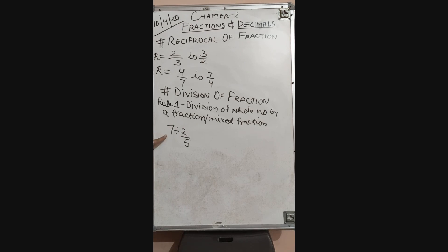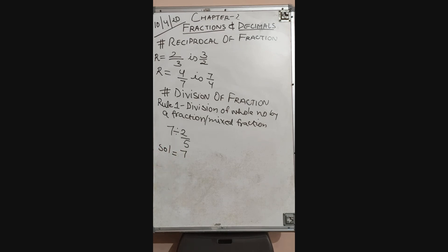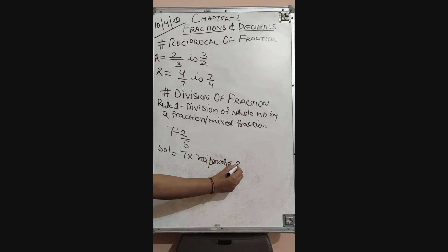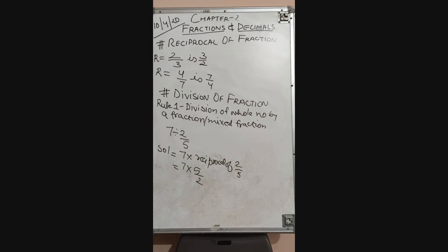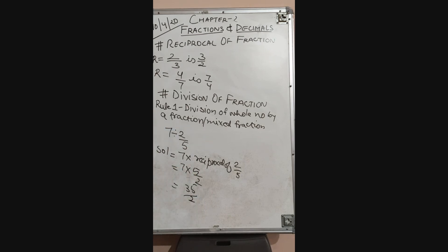If we want to divide any whole number by any fraction, we have to take the reciprocal of the fraction. So we can write this as 7 multiplied by the reciprocal of 2 upon 5. The reciprocal of 2 upon 5 is 5 upon 2. So 7 into 5 upon 2 gives us 35 upon 2.